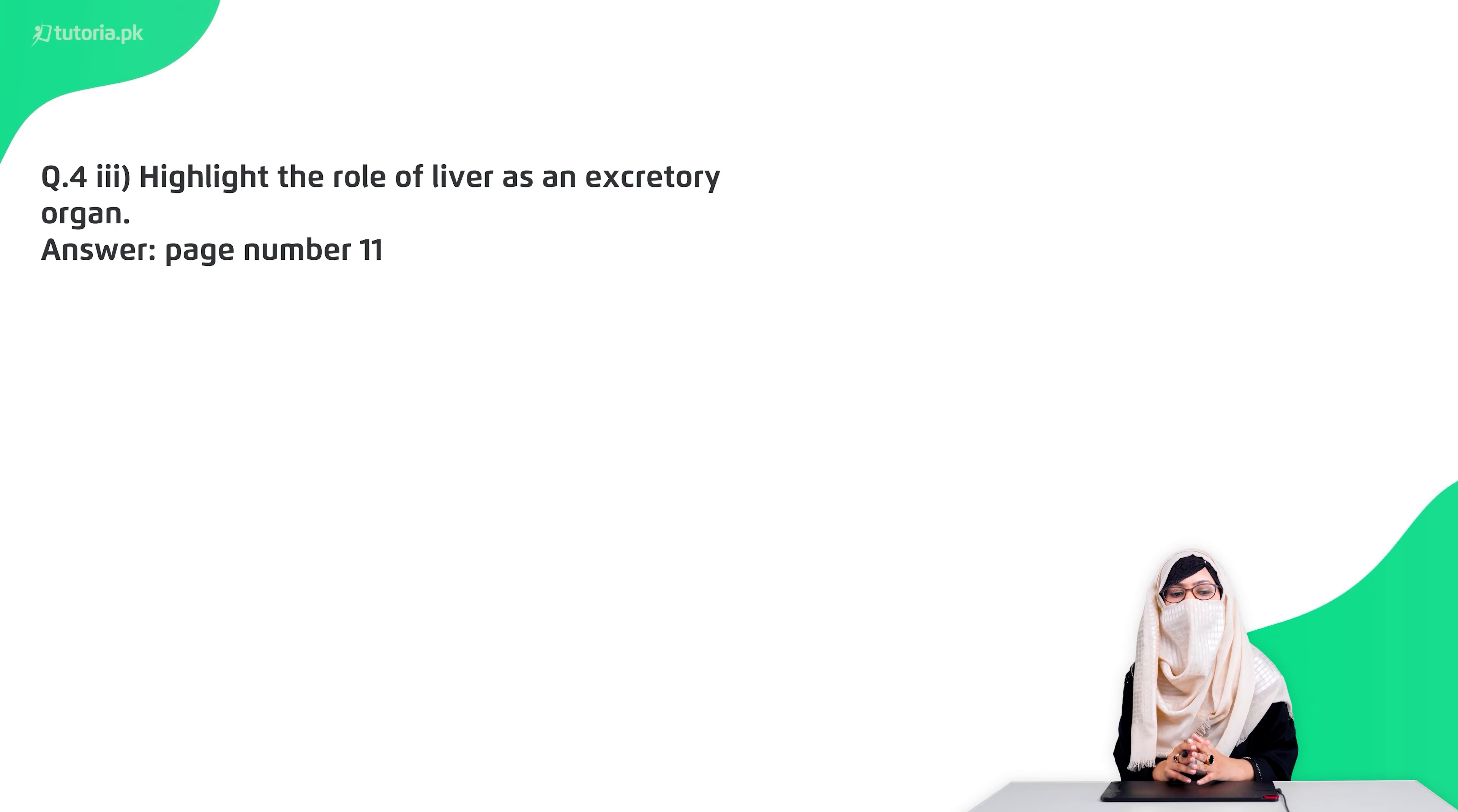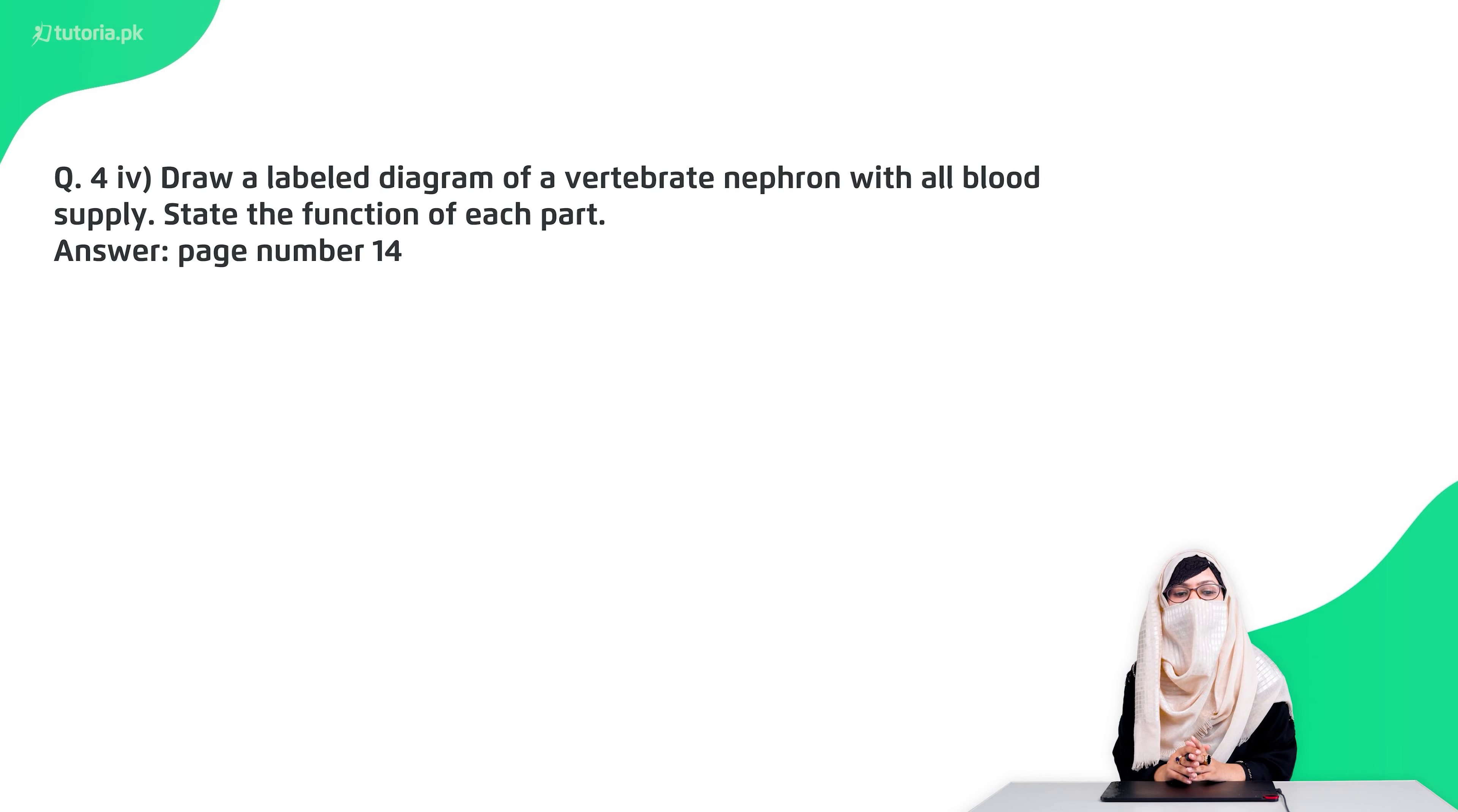So you have to explain all these things and this is on page number 11. The fourth question is draw a label diagram of a vertebrate nephron with all the blood supply state function of each part. Now here you have to draw a diagram of nephron. And you have to tell each region of which region is how it performs in the urine formation. In the videos you have explained this part and in your book page number 14 is given.